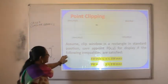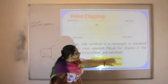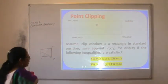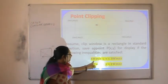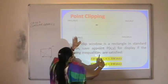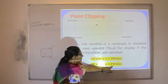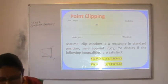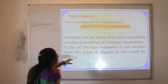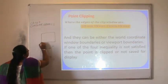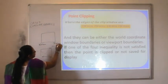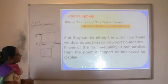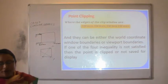Assume that the clip window is a rectangle in standard position. A point (x, y) is saved for display if it satisfies: xwmin ≤ x ≤ xwmax and ywmin ≤ y ≤ ywmax. If the x-coordinate of the pixel is greater than or equal to xwmin and less than or equal to xwmax, it lies within this window — that point is inside the window. The edges of the clip window are xwmin, xwmax, ywmin, and ywmax. They can be either the world coordinate window boundaries or view boundaries.